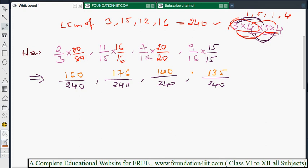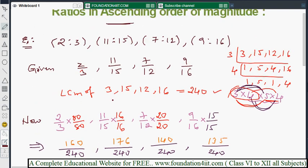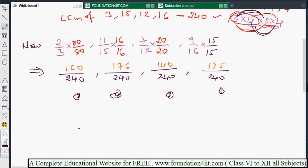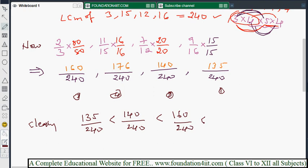If you do multiplication, then by comparing numerators only we have to say which is small, which is big. 160, 176, 140, 135. So 135 is less. This is in ascending order in first place. You can mark the numbers now. This is in first place, and this is second, and here is third, and this is fourth. Smallest number is 135 by 240. This clearly will say 135 by 240 is less than 140 by 240 less than 160 by 240 less than 176 by 240.